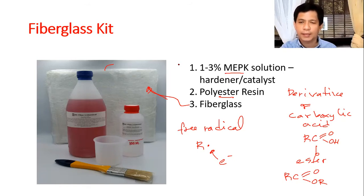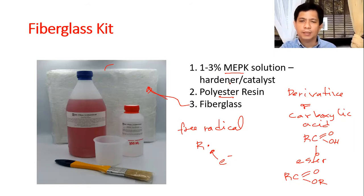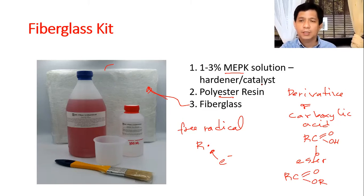Let's take a look at the MEKP. It's a catalyst, so you only need a small amount — 1 to 3%. In layman's terms, aside from catalyst, they also call this a hardener. But in chemistry, this is a catalyst — it hastens the reaction but is not consumed in the process.